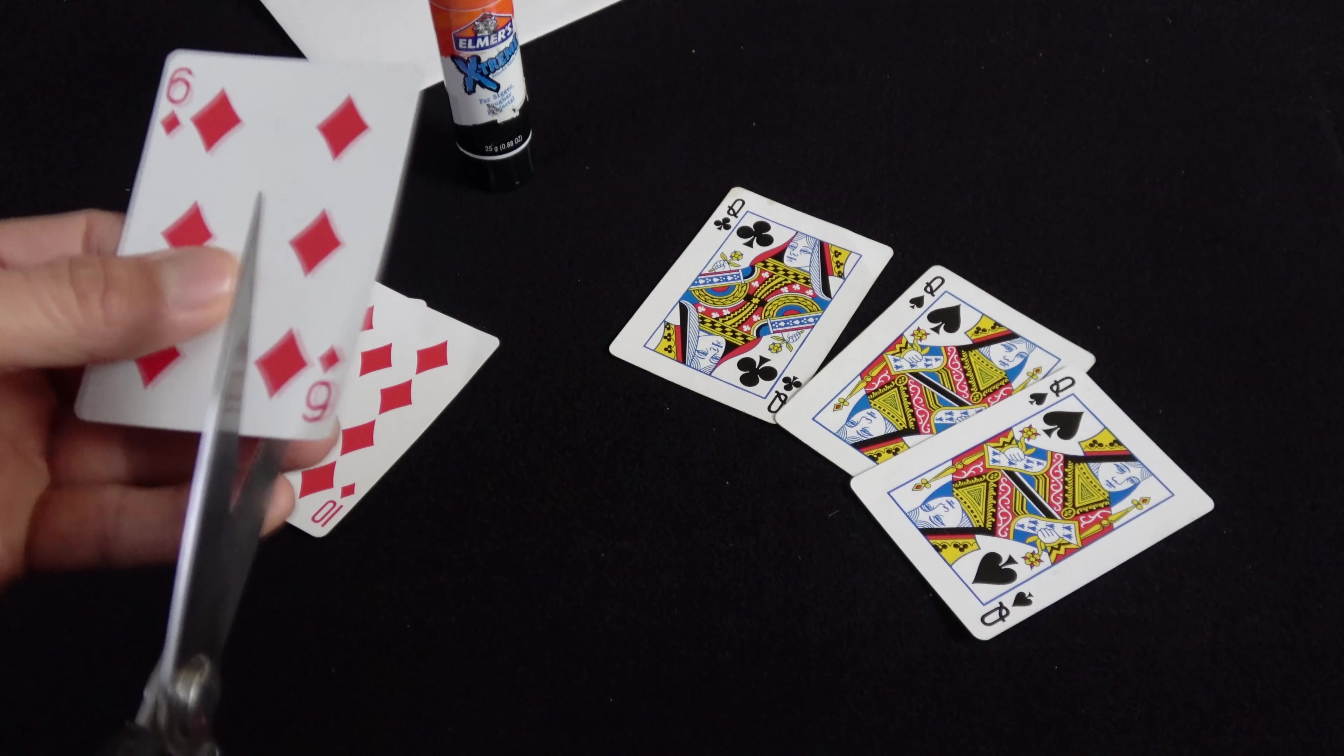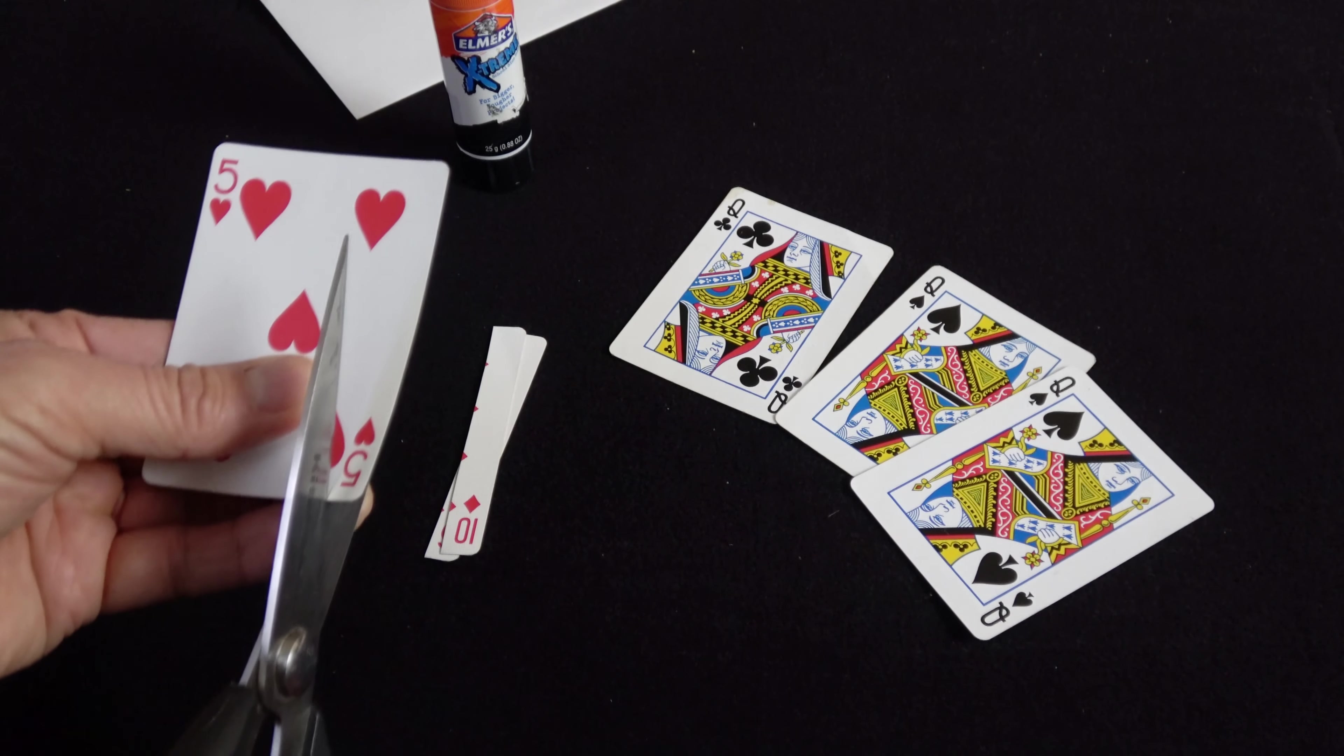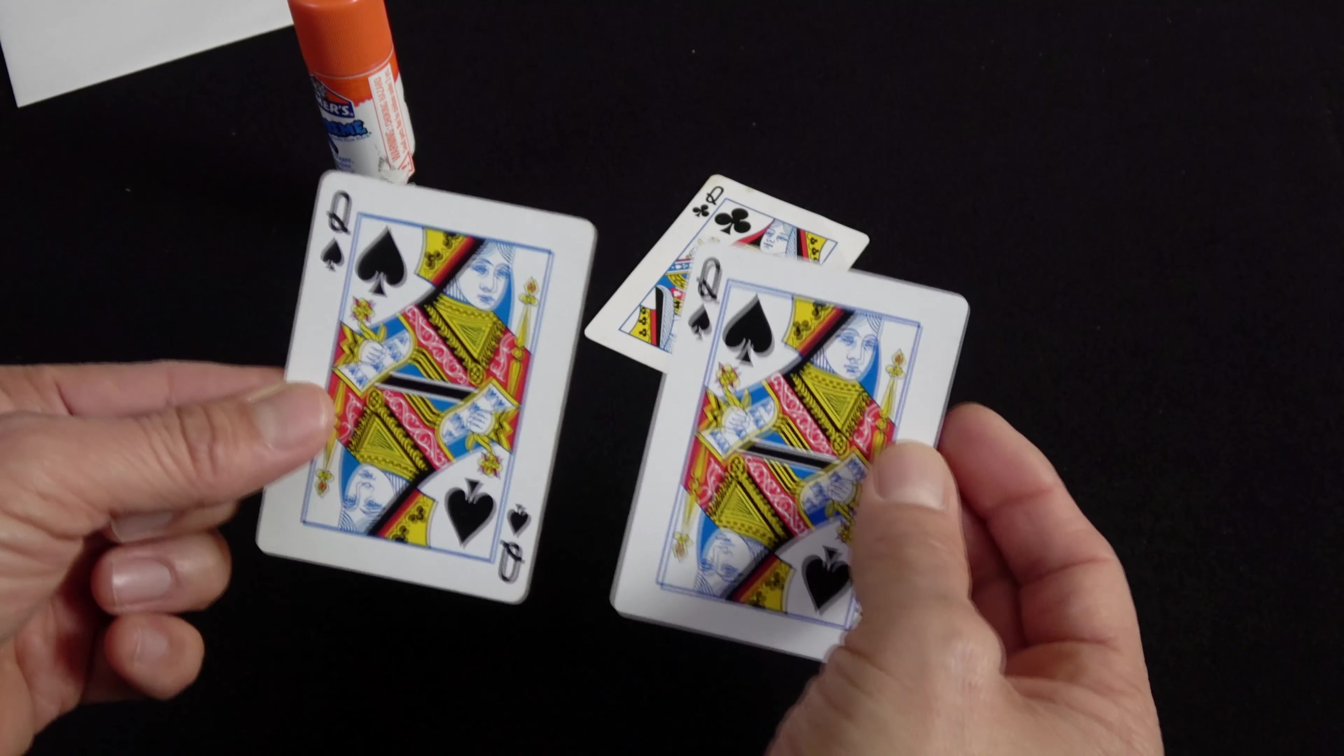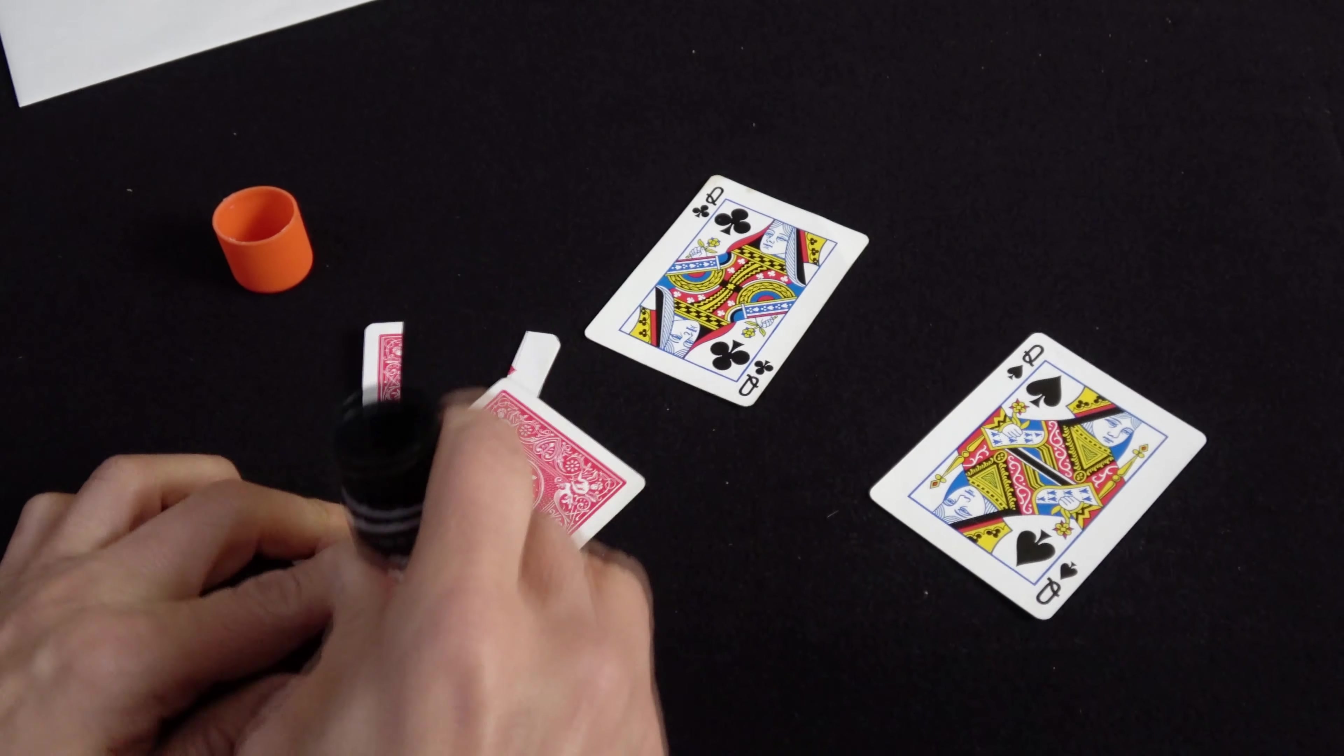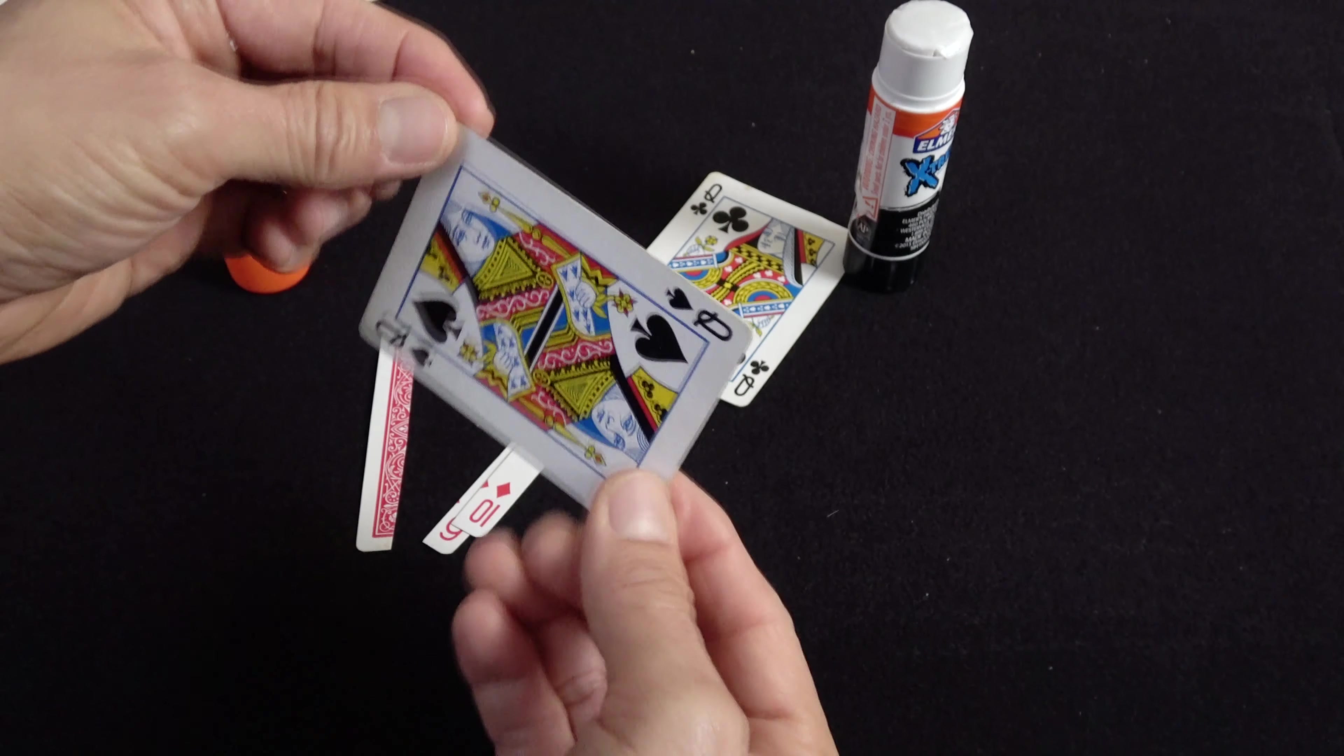Taking your scissors, you're going to cut right along here a thin strip. Now take your matching cards, the queen of spades, and glue the queen of spades back to back.